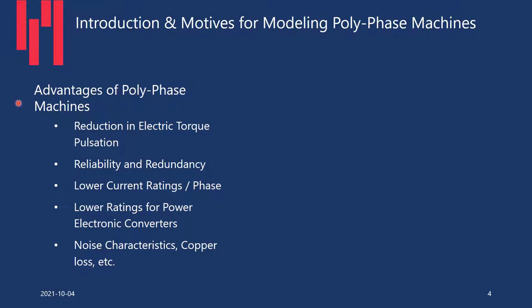What are the advantages of a polyphase machine? First, reduction in electric torque pulsation — the source of torque pulsation is either harmonics from the network or space harmonics from winding distribution, and having more than three phases reduces this pulsation. Second, reliability and redundancy — with more than three phases, you could lose one or two phases and still operate the machine to a reasonable extent. Third, lower current rating per phase and lower ratings for power electronic converters. Additionally, reduced noise characteristics and copper losses.